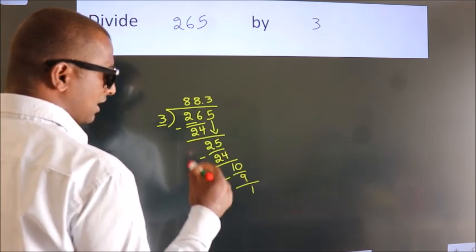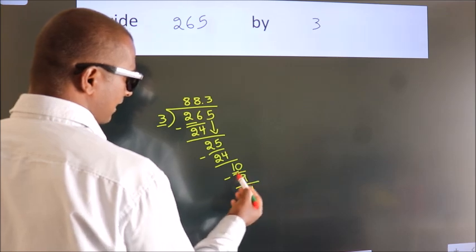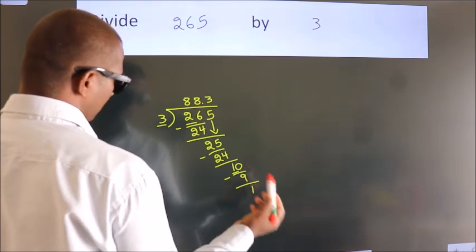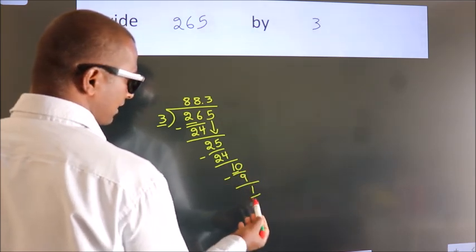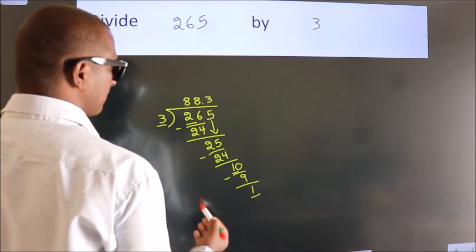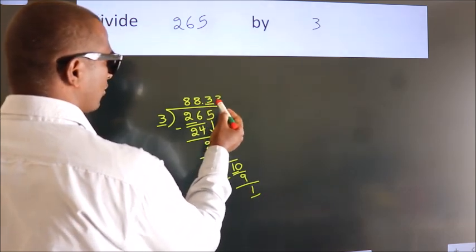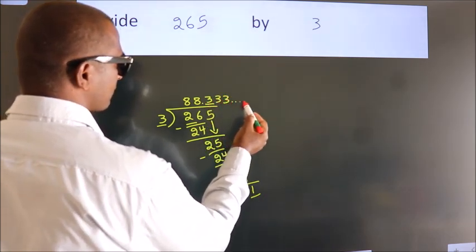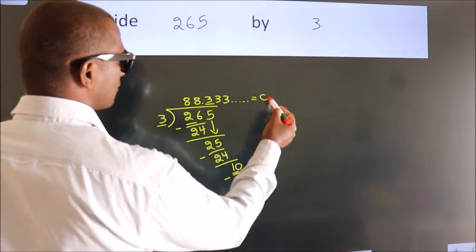Now you observe: we had 1 here, and we got 1 again. That means this number keeps on repeating. So this is our quotient.